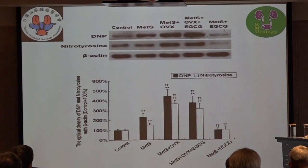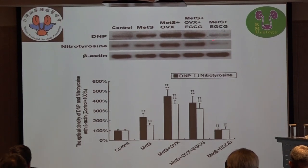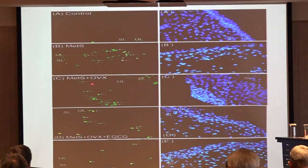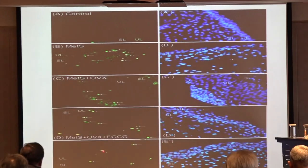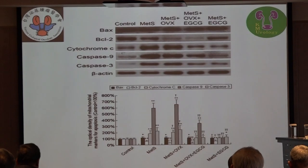For oxidative stress markers, 4-HNE and nitrotyrosine similarly increased in metabolic syndrome with or without ovariectomy, but decreased after EGCG treatment. The TUNEL assay showed that apoptotic cells increased in the urothelial and submucosal layers in the metabolic syndrome with ovariectomy group, but decreased to almost control level after EGCG treatment, especially in the metabolic syndrome with EGCG group.